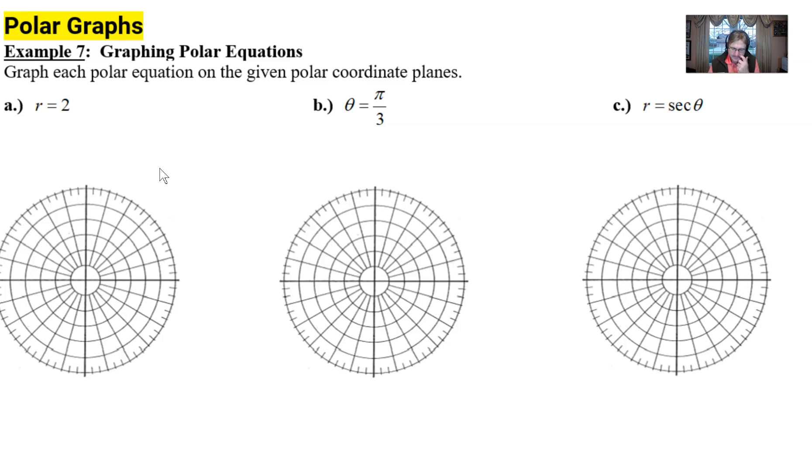The thing to think about for r equals 2 is that it says what it says: radius equals 2. It doesn't say anything about the angle measure, so the angle could be anything. If you think about radius 2, which is any point along this concentric circle, all we need to do is connect those dots along that concentric circle.